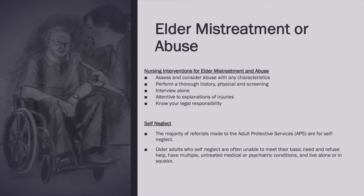As a nurse, make sure you assess and talk to the patient, perform a history and physical, and screen them for safety issues. Interview them alone — the patient won't tell you they're being abused in front of the abuser. Monitor for injuries and bruises in different stages. This applies to abuse in general, and you must know that you are required to report confirmed abuse.